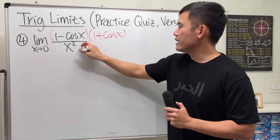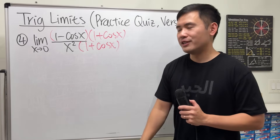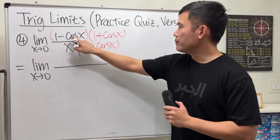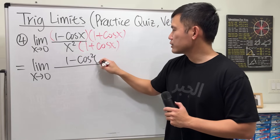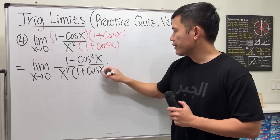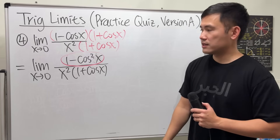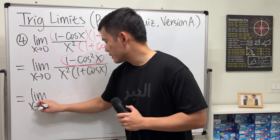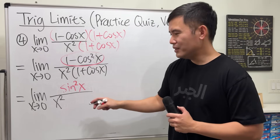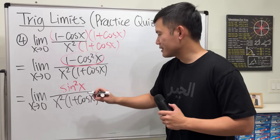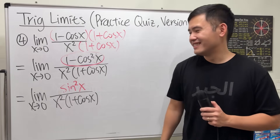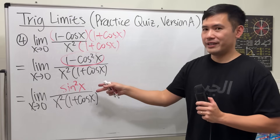Multiply top and bottom by (1 plus cosine x). The top becomes 1 minus cosine squared x, which equals sine squared x. Keep the bottom as x squared times (1 plus cosine x) — don't multiply it out. Sine squared x means sine x times sine x, and x squared means x times x. We can break this apart using the limit law.